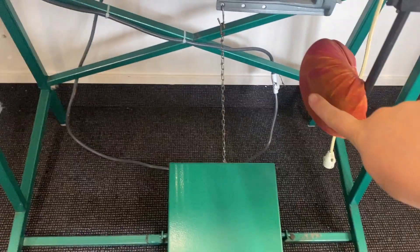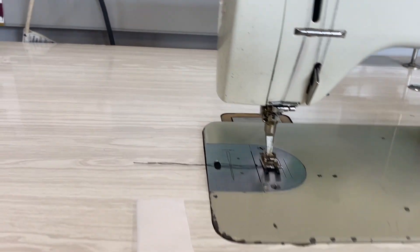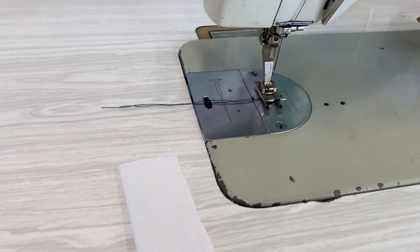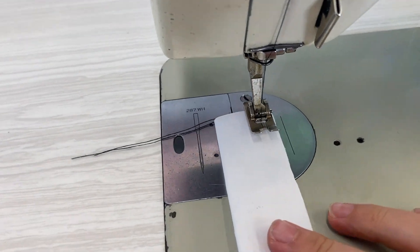Have that down and use the knee lever here. When you're sitting at the machine, you need to be nice and close so you can use your knee to lift the foot and get your fabric in. Lift the foot, put your fabric in.